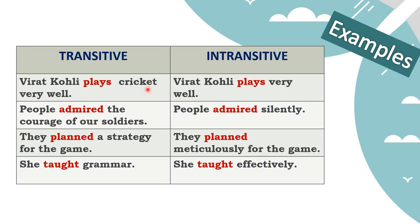'Virat Kohli plays cricket very well' - plays what? Cricket - there is an object. 'Virat Kohli plays very well' - plays what? No object. 'People admired the courage of our soldiers' - admired what? The courage - object present. 'People admired silently' - no object. 'They planned a strategy for the game' - planned what? A strategy - object present. 'They planned meticulously' - planned what? No answer, no object.